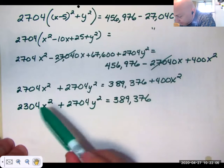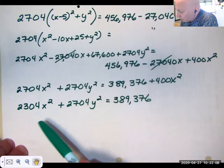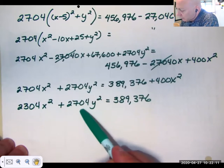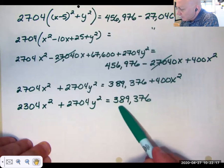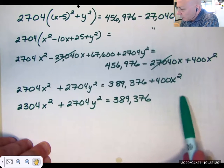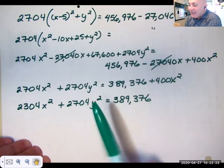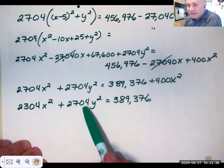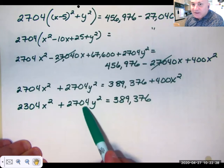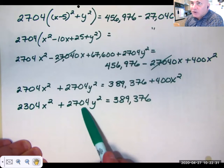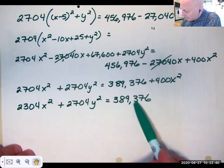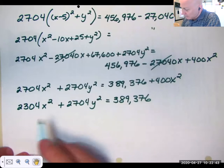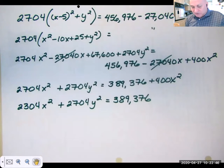Now, you'll notice if we were to put this into general form, it would be 2,304x squared plus 2,704y squared plus 0x plus 0y minus 389,376 equals 0. That would be general form. Now, what we would do is we'd notice that A and C are of the same sign, and they're different numbers. So, that would mean either they're an ellipse, a degenerate ellipse, which is a point, or no graph at all. But we can tell here by dividing by 389,376. Now, that's so exciting. We've got to change colors again.